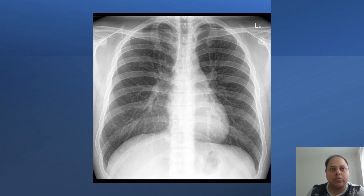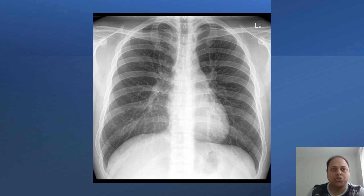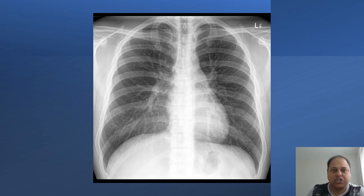Every chest X-ray tells you a story and your job is to read it. Just as a story has a main protagonist, in a chest X-ray you should first look for the patient's name, and the date and time of the X-ray. This will also show the projection of the chest X-ray — AP or PA film — and sometimes there will be a marker indicating the left and right side of the patient. The next thing to note is the rotation of the X-ray.